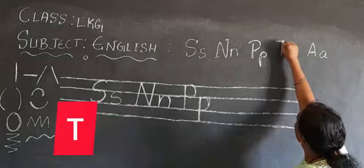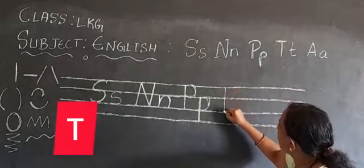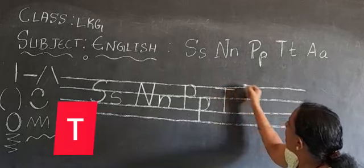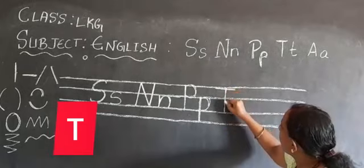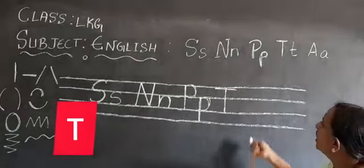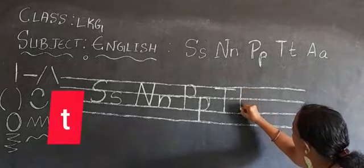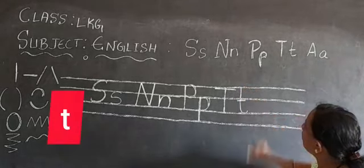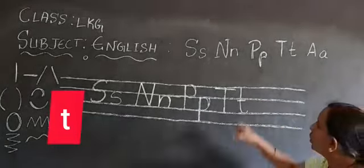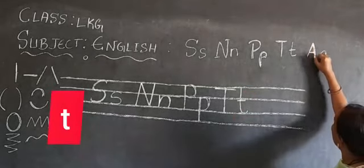After P comes T. How should you write capital T? Standing line from the first line to the third line, then a sleeping line on top — that becomes capital T. For small T, standing line and a curve, and a sleeping line — that becomes small T. Capital T and small T: you should touch the first line and the third line.